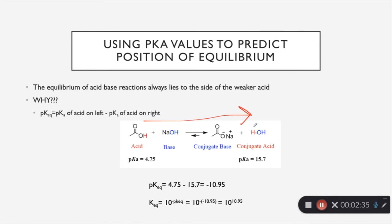This is true because water is a weaker acid than acetic acid. And we know this because a smaller pKa is going to be the stronger acid, leaving water here as the weaker acid.